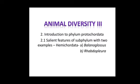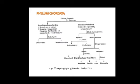Today we are going to study Animal Diversity 3, Chapter 2: Introduction to Phylum Protochordata. The subtopic is 2.1, salient features of subphylum Hemichordata with two examples — Balanoglossus and Rhabdopleura. We are going to revise what we have studied so far.